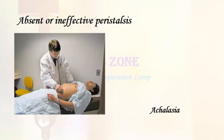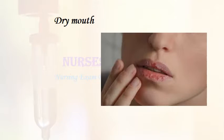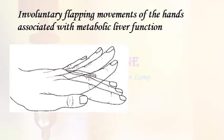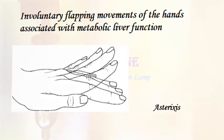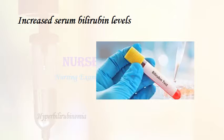Absent or ineffective peristalsis: achalasia. Dry mouth: xerostomia. Involuntary flapping movements of the hands associated with metabolic liver function: asterixis. Increased serum bilirubin levels: hyperbilirubinemia.